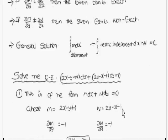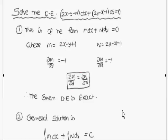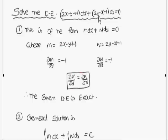Now we consider one example. Solve the differential equation (2x − y + 1)dx + (2y − x − 1)dy = 0. This is in the form Mdx + Ndy = 0, where M = 2x − y + 1 and N = 2y − x − 1.